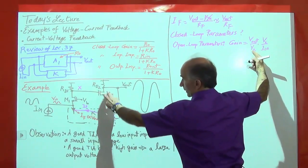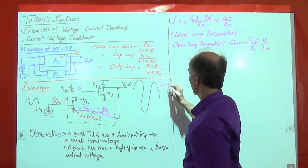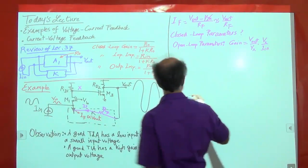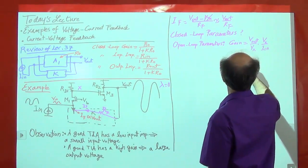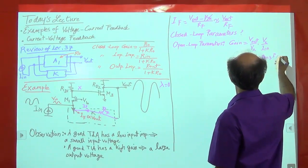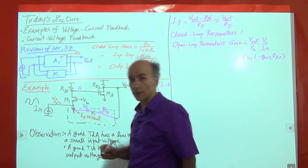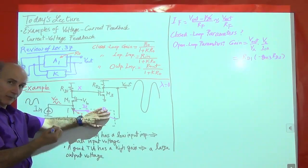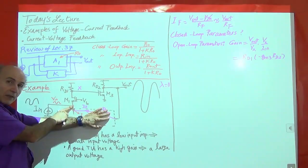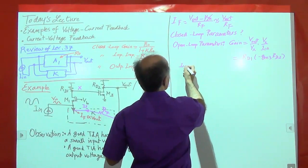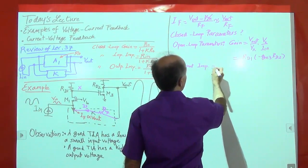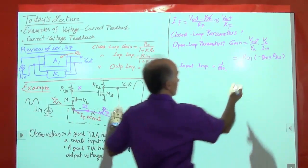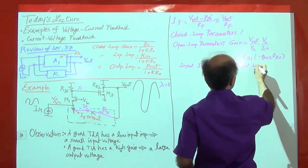Vout over Vx is minus GM3·Rd2 — it's a simple common-source stage, assuming lambda is zero. Then Vx over Iin: this voltage over this current is just Rd1, because that current has nowhere else to go but through Rd1. So the gain comes out to be Rd1 times minus GM3·Rd2. That's the open-loop gain of the structure. The input impedance is 1/GM1, and the output impedance is Rd2.